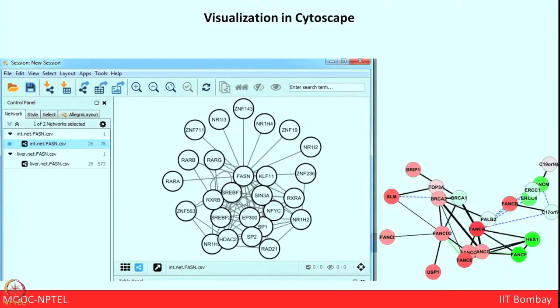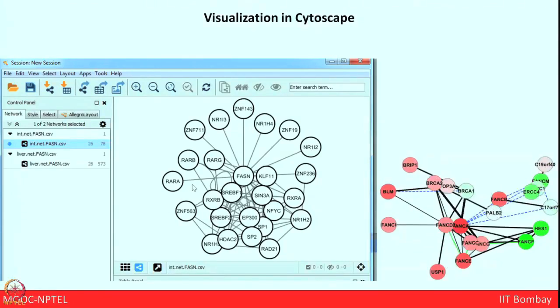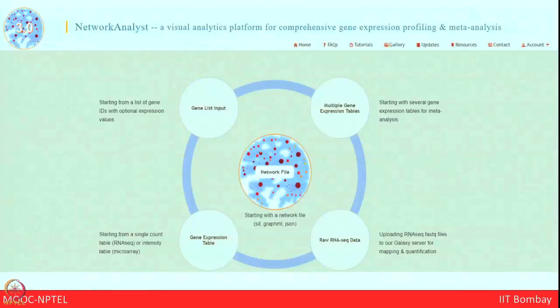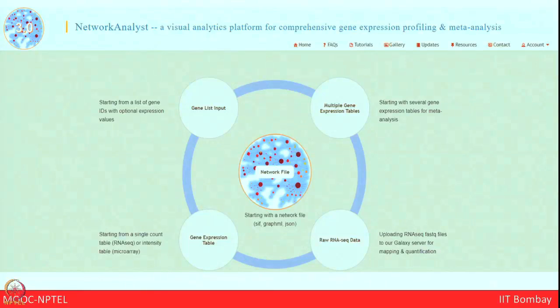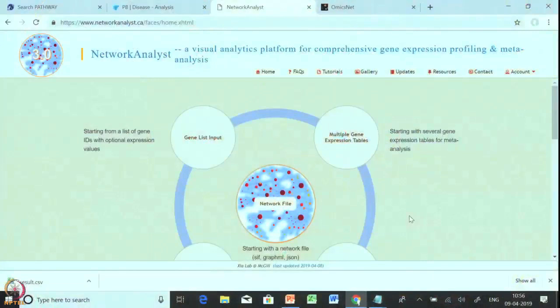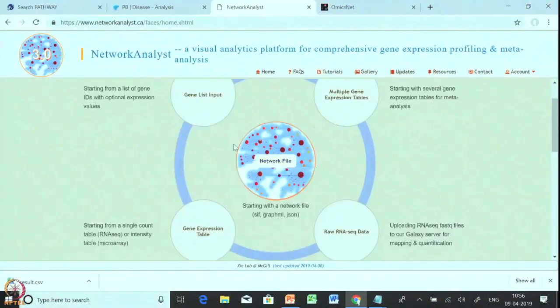As Cytoscape has different plugins we can generate different kinds of visualization networks. Today I want to show you a very robust visual analytics platform for comprehensive gene expression profiling and meta-analysis — Network Analyst. Network Analyst gives you different visualization platforms where you can do single analysis, multiple analysis, and even multi-gene expression analysis. After clicking 'Gene List Input' you see a home page where you select the organism — Homo sapiens — and the ID type. As we are using the same test file, we know this is a UniProt ID, then we copy-paste the ID names.